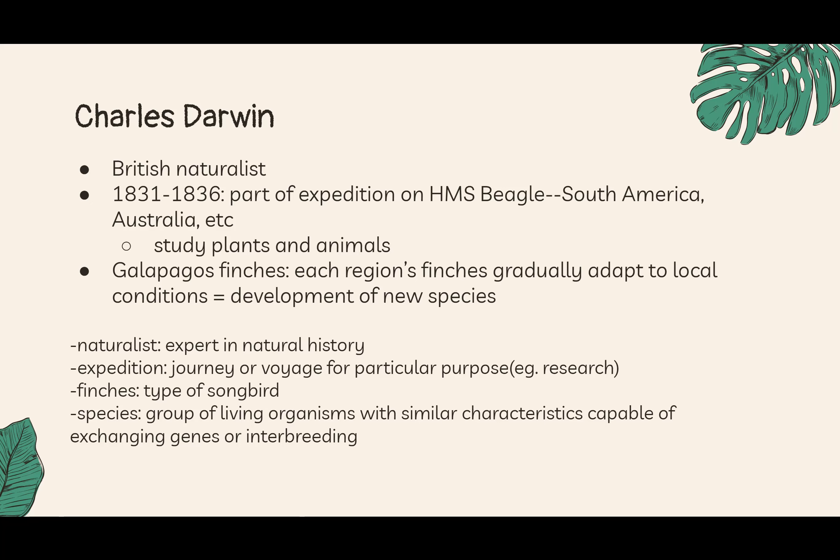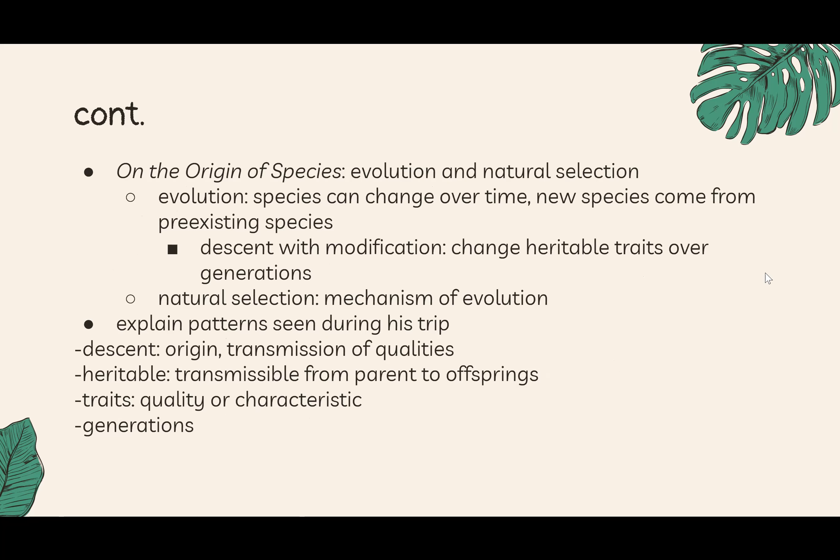On the Origin of Species is a book that Darwin published with his theories and conclusions from his voyage. It talks about two main things: evolution and natural selection. Evolution is when species change over time and new species come from pre-existing species — he calls it descent with modification.